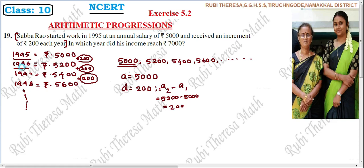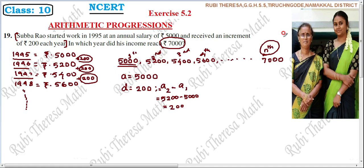The first term corresponds to the first year, second term to the second year, third term to the third year, and so on. We don't know which year his salary reaches Rs. 7000, so we call that term N. We apply the nth term formula: A_n equals A plus (n minus 1) into D.